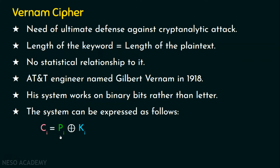This system can be expressed as follows. The i-th binary bit of the plaintext is XORed with the i-th binary bit of the key, and the result of this XOR operation is the i-th binary bit of the ciphertext. For example, the first binary bit of the plaintext is XORed with the first binary bit of the key to produce the first binary bit of the ciphertext. It is a very simple bitwise XOR, or exclusive OR, operation.